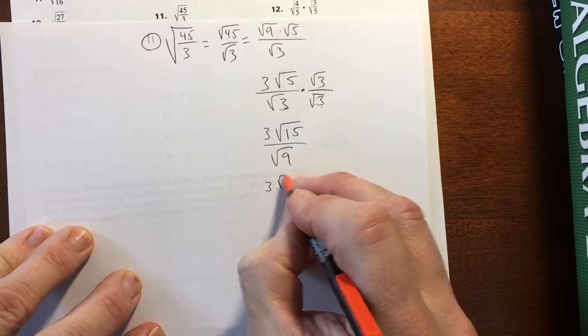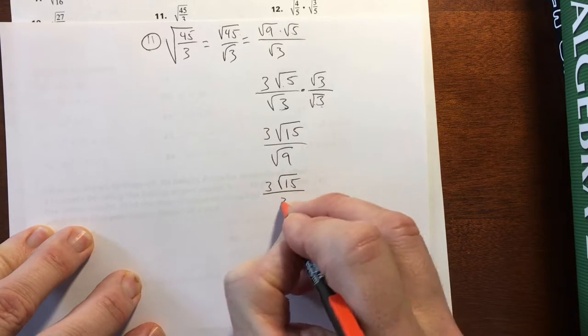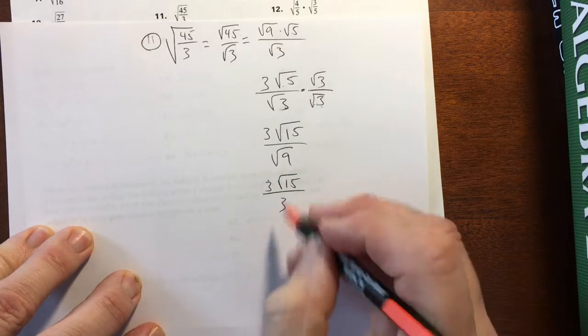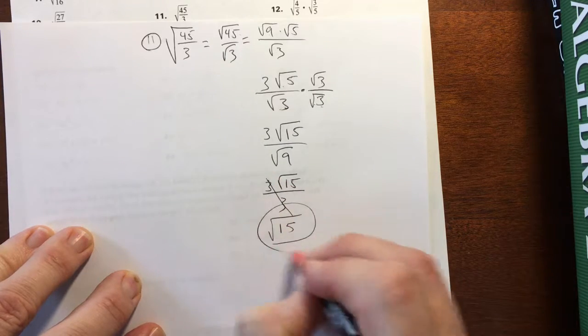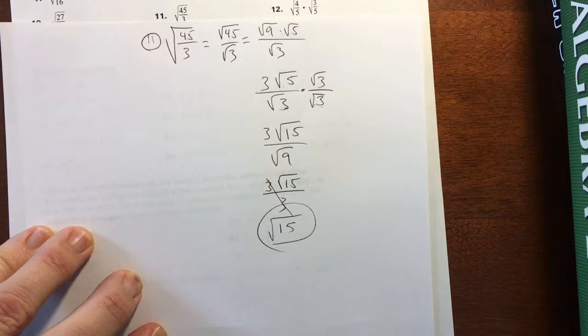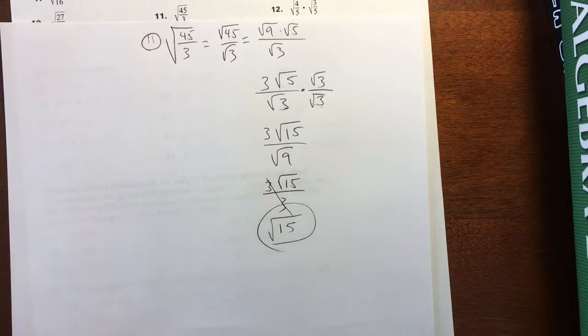So it's going to be 3 square root of 15 over 3. And for the simplification, those are gone. The answer is just square root of 15. That's number 11. Let's also try, I had number 15 selected for you.